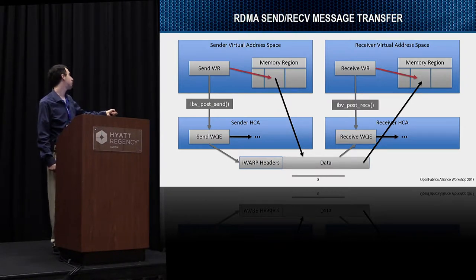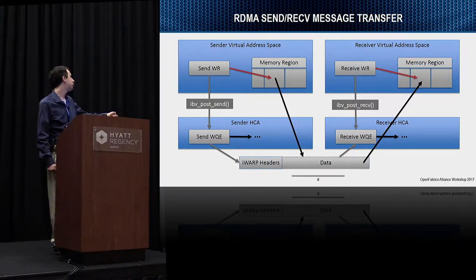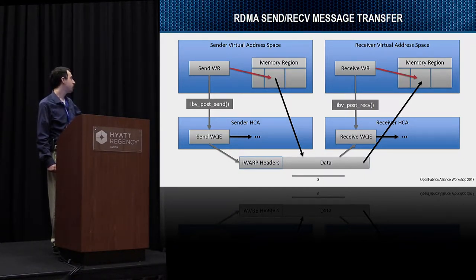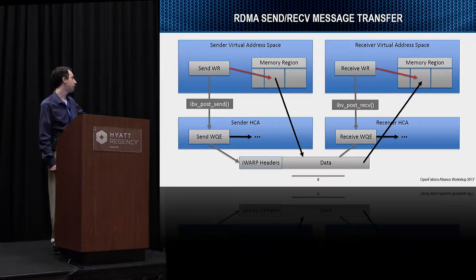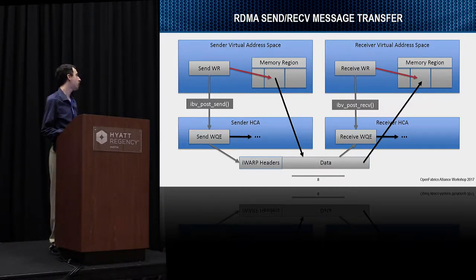This diagram contrasts verbs with what DPDK does. In verbs, you have a send work request that refers to one or more memory regions. When you post a send, it goes into a queue in the HCA. When it processes that, it takes the data from each individual packet directly from virtual memory onto the wire, prepending all necessary headers. On the reverse end, the program has previously enqueued a bunch of receive work requests, and as each packet is received, the data is placed directly into the corresponding memory region. The user gets notified when the operation completes.